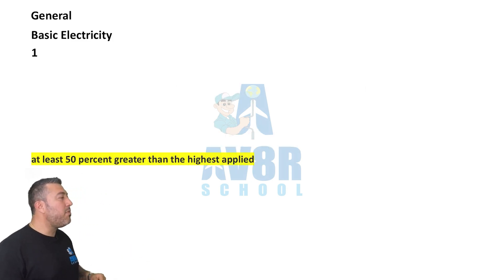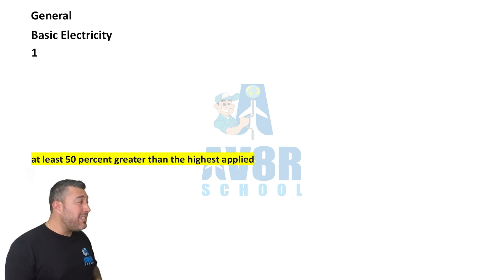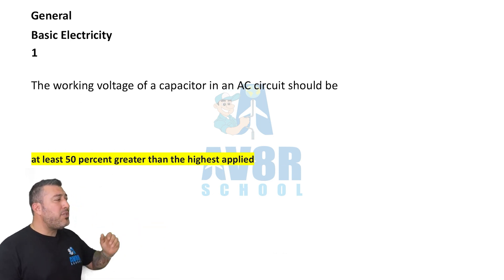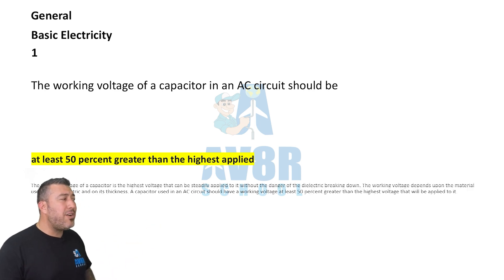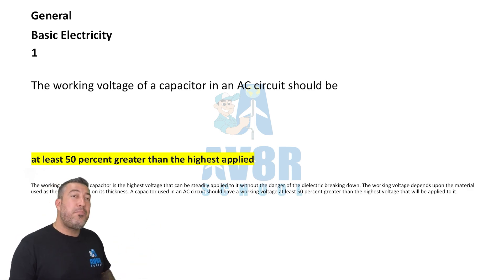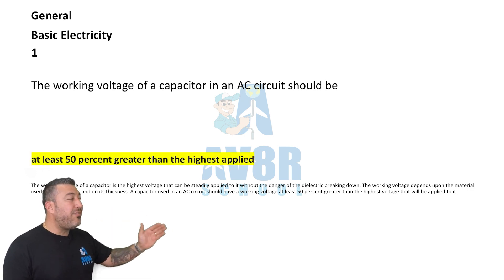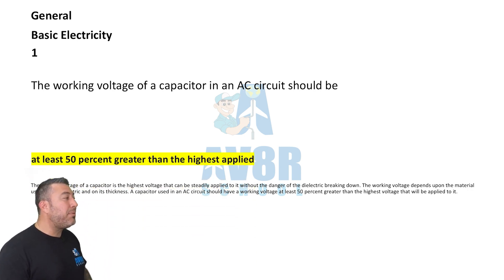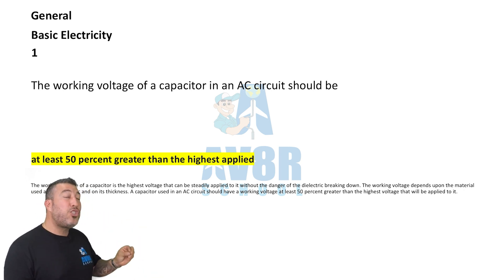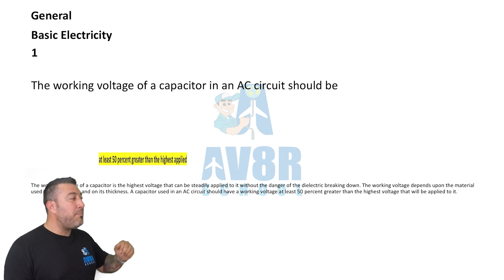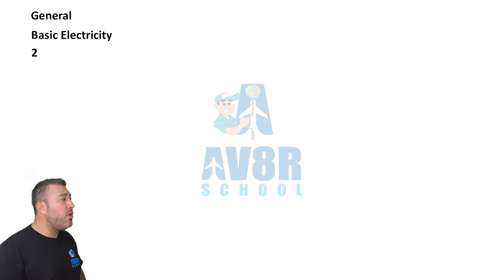Question number one, Basic Electricity. The working voltage of a capacitor in an AC circuit should be at least 50 percent greater than the highest applied voltage.